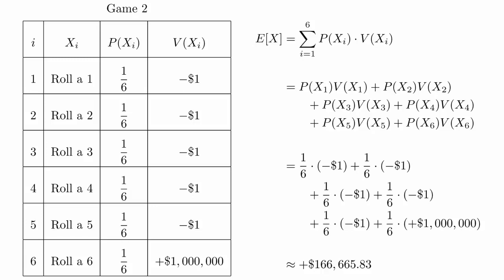If we switch to game two, the only change is the value of rolling a six. Instead of winning a penny, you win a million dollars. When we do the calculation now, the expected value is about 160 thousand dollars. This means that you expect to win around 160 thousand dollars every time you play the game.